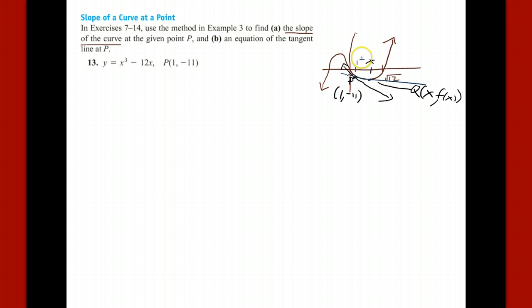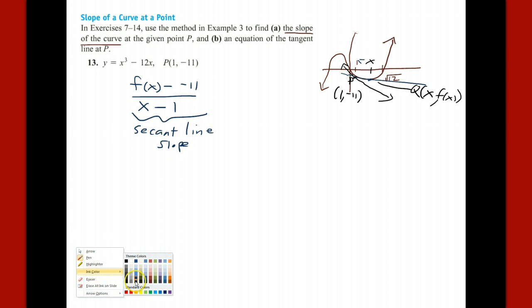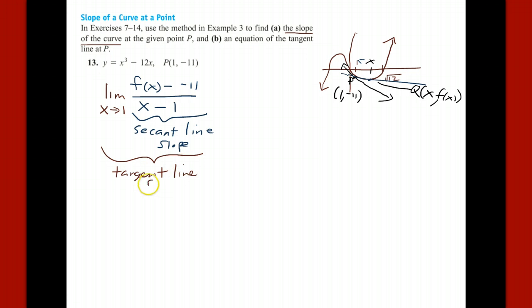But as x approaches 1, that secant line slope will be the tangent line slope. And so it's our job to find this f of x minus negative 11, all divided by x minus 1. That'll be the secant line slope. And then when we take the limit as x goes to 1 on this, then what we have is the tangent line slope. And that's what we're looking for.